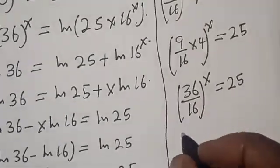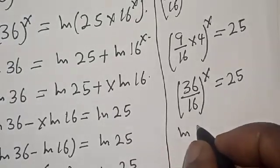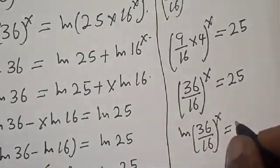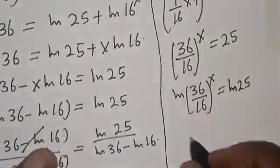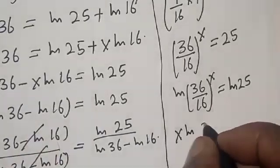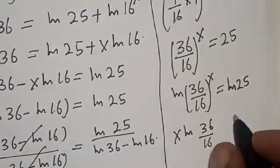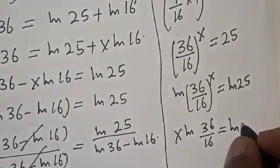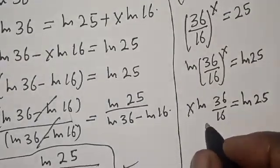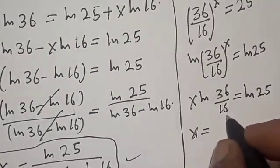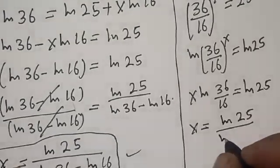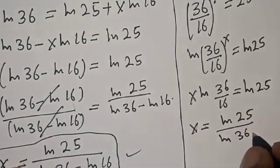Now let's take the log of both sides. We have the natural log of 36 over 16, all raised to the power of S, is equal to natural log of 25. Then we have S natural log of 36 over 16 is equal to natural log of 25. Now let's divide both sides by natural log of 36 over 16. Then we have S is equal to natural log of 25 over natural log of 36 over 16.